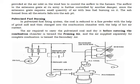In a pulverized fuel firing system, the coal is reduced to a fine powder with the help of a grind mill and then charged into the combustion chamber with the help of hot air current. The air required to carry the pulverized coal and dry it before entering the combustion chamber is termed the primary air, and the air supplied separately for complete combustion is termed the secondary air.